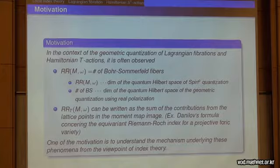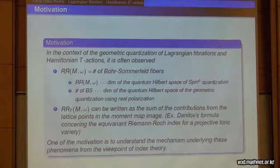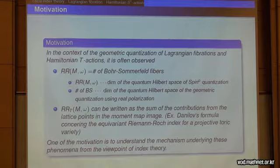For the Hamiltonian torus actions case, the equivariant Riemann-Roch index can sometimes be written as the sum of contributions from the lattice points in the moment image — for example, Danilov's formula concerning the equivariant Riemann-Roch index for a projective toric variety. One of the motivations is to understand the mechanism underlying these phenomena from the viewpoint of index theory.